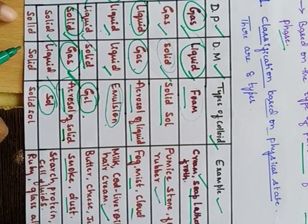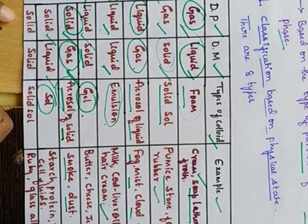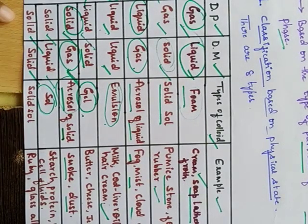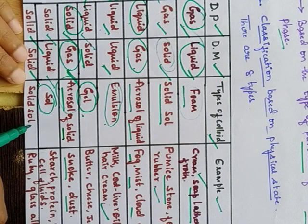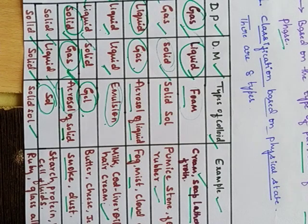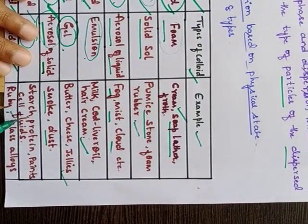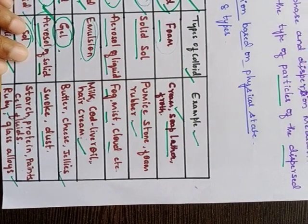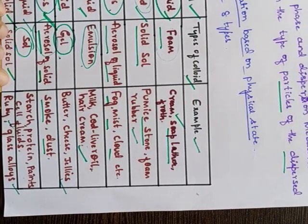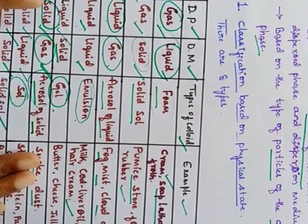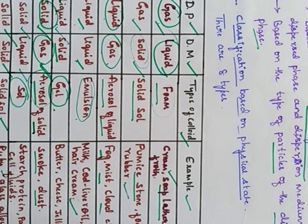The last class based on physical state of dispersed phase and dispersion medium is solid-solid. Solid-solid mixtures can form homogeneous, heterogeneous, or colloidal mixtures. This type of colloid is called a solid sol. Examples include ruby stones, glass alloys, and some colored glasses.